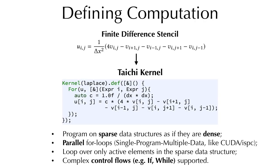Defining computation in Tai Chi is rather straightforward. Programmers can access sparse data structures using indices as if they are dense. We offer parallel for loops so that users can code in a single-program multiple data paradigm, as in CUDA or ISPC. For loops in Tai Chi loop over only active elements in sparse data structures. We also support complex control flows such as if and while statements.